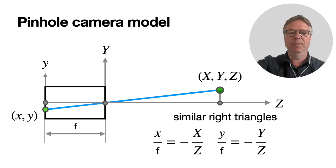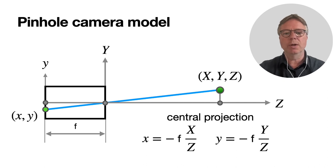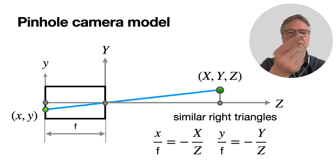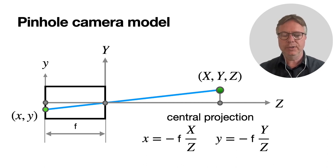If we do a simple calculation, basically we take the F to the other side, and then we have two simple formulas for central projection. So a 3D point XYZ is projected onto the image point xy. And these are the two formulas: x is minus F times X over Z, and y is minus F times Y over Z.